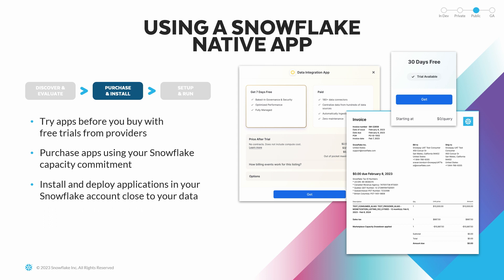Customers can leverage free trials to try out the app before deciding to purchase — they'll be able to see all the UI, stored procedures, and UDFs to determine if this is an application they want to buy. As emphasized in the keynote, you can actually purchase apps using your Snowflake capacity commitment. If you have extra capacity, you can use that to purchase native apps. Once you click the Get button, you can install on your Snowflake account and keep it close to your data.